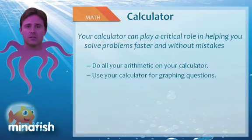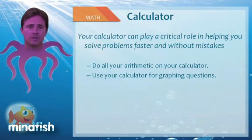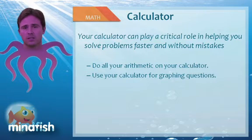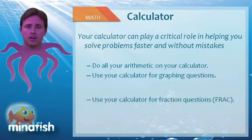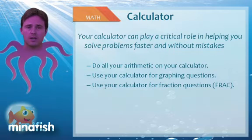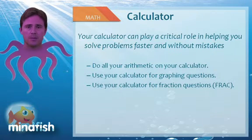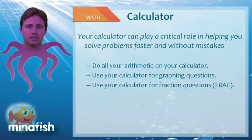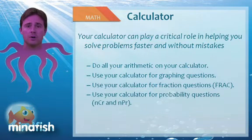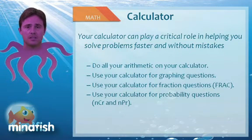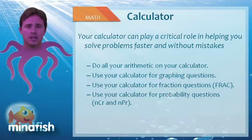Second, use your calculator for all graphing questions, trying to find out where a graph intersects an axis or where it intersects another graph. Third, use your graphing calculator to do all fractional arithmetic problems. Once we're done, we can just hit the frac button and turn any answer that's a decimal back into a fraction. Lastly, use your graphing calculator to do probability questions, namely NCR and NPR, which is combination and permutation.